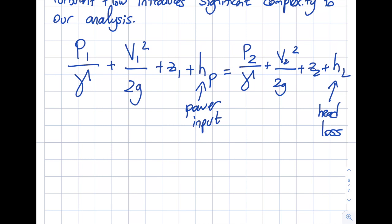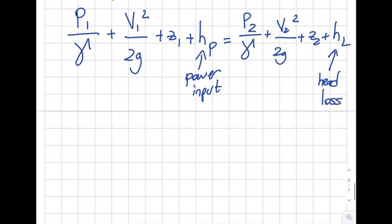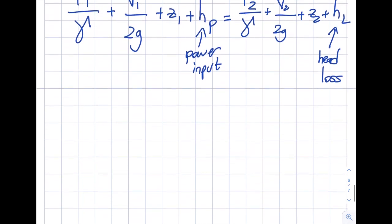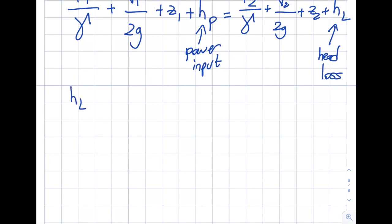Now let's talk about head loss h_L. We discussed this in conservation of energy during control volume analysis. Its unit is also length. We divide head loss into two components: major and minor. h_L major is due to viscous effects in straight pipes — constant diameter with no bends, no valves, no other pipe components.